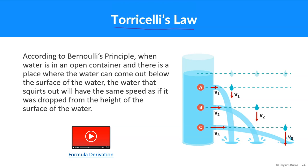According to Bernoulli's principle, when water is in an open container, open container meaning like usually the top is open and there is a place where the water can come out below, in this example here, here, here. The surface of the water, the water that squirts out will have the same speed as if it was dropped from the height of the surface of the water. So it's just a pretty cool law.